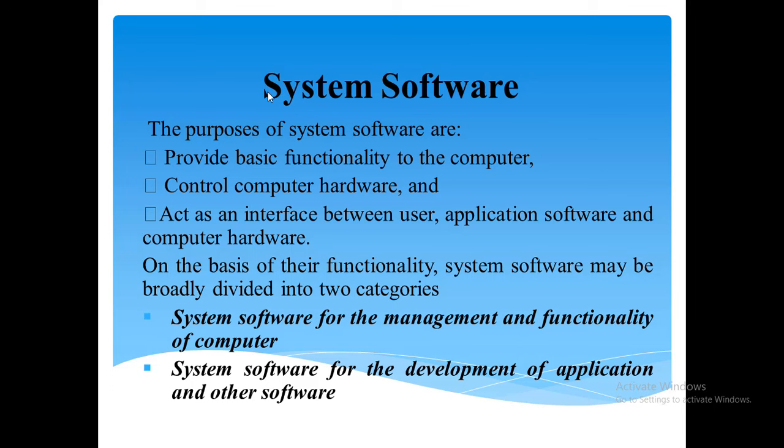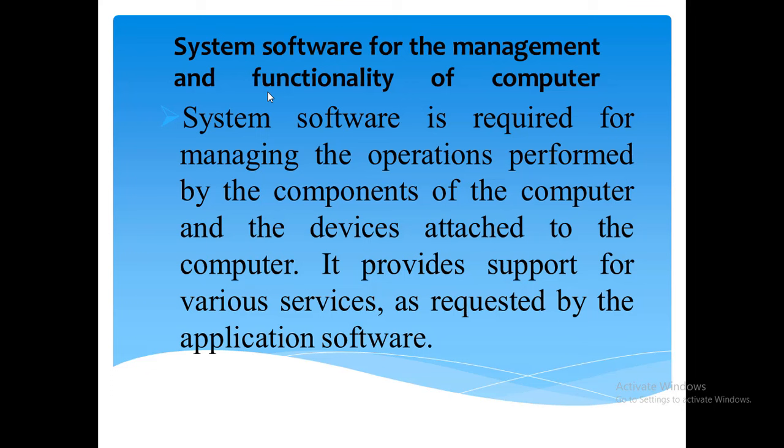On the basis of functionality, system software may be divided into two main categories: first, system software for management and functionalities of the computer; and secondly, system software for the development of applications and other software.